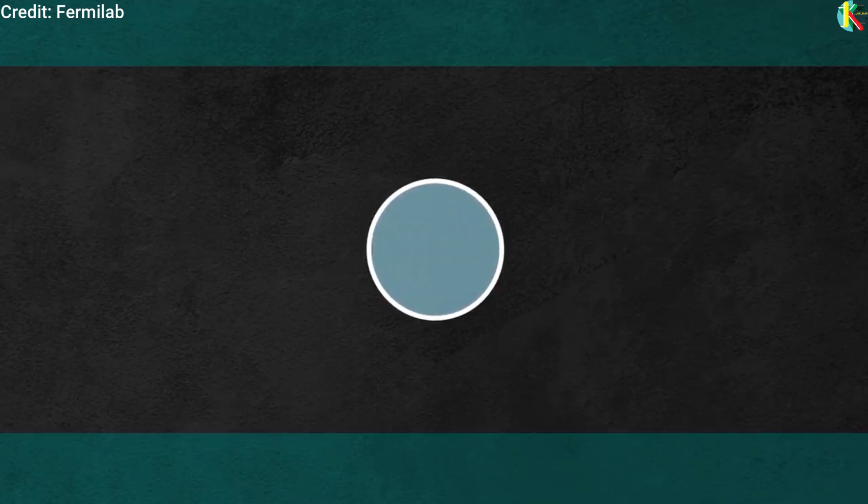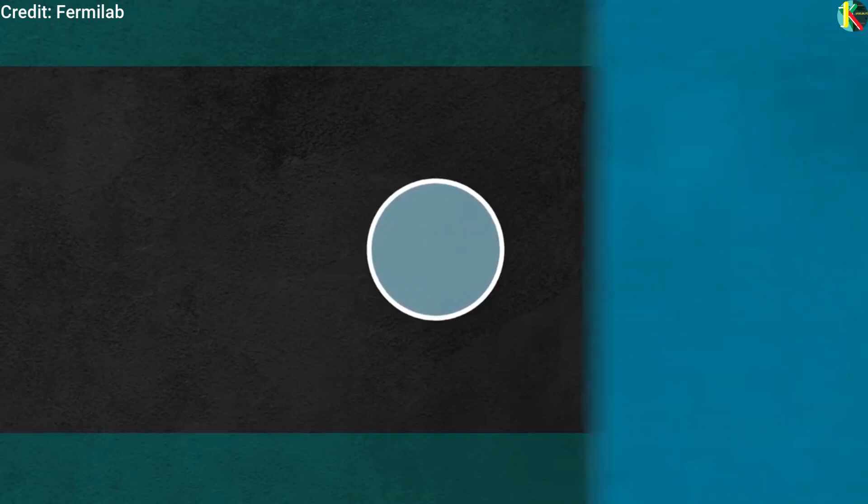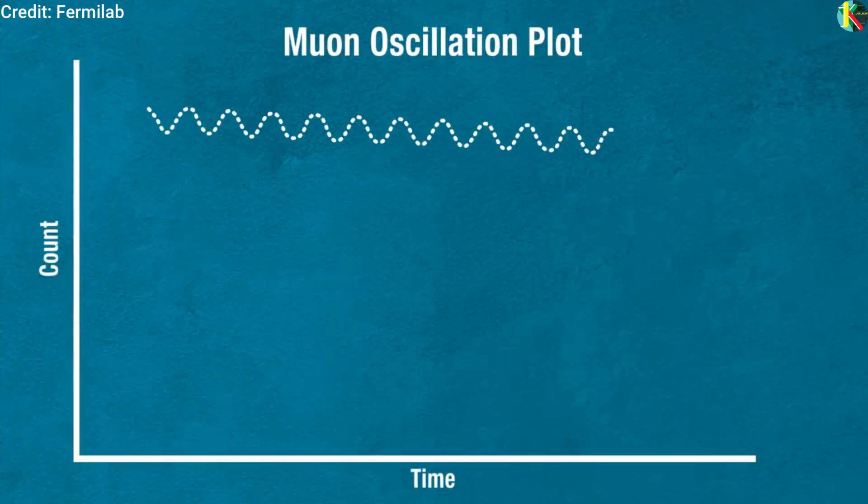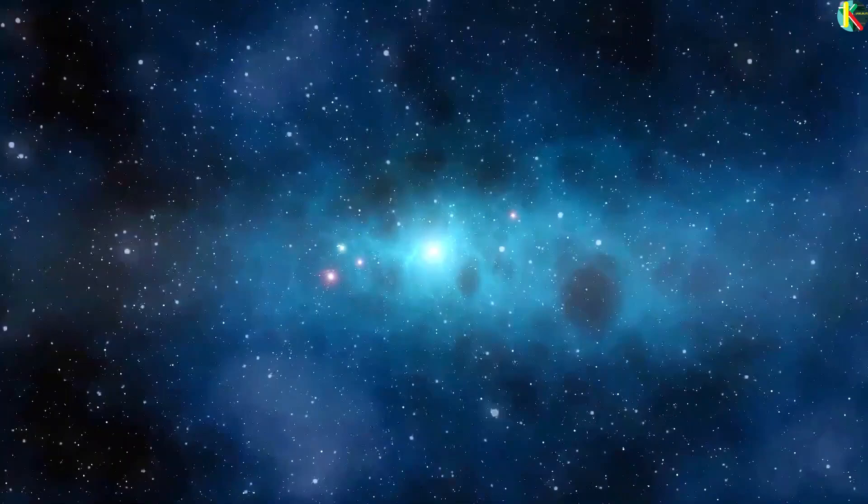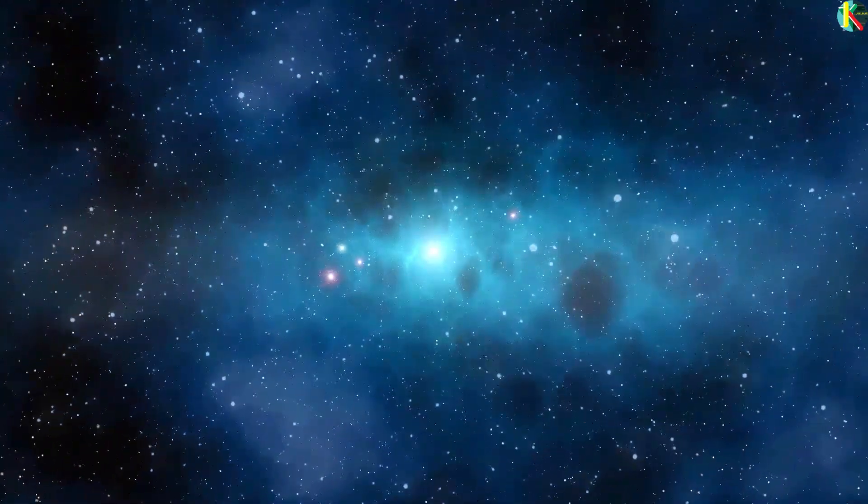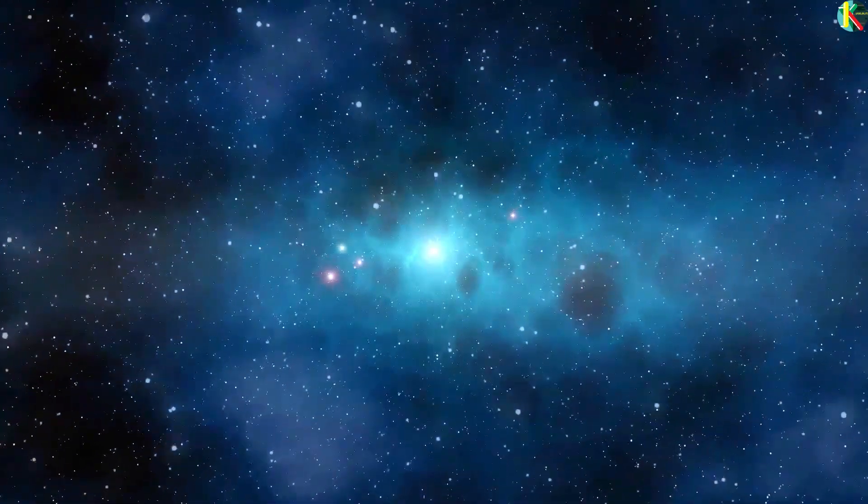This frequency difference is the anomalous precession omega-a. Since the decay positrons are preferentially emitted in the direction of the muon spin, their spectrum shifts to the higher energies when the spin direction is aligned with the momentum. This shift produces a modulation in the number of positrons detected by the calorimeters.